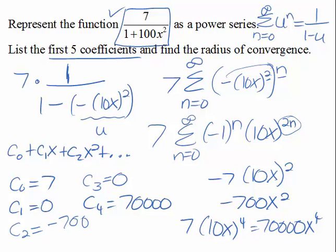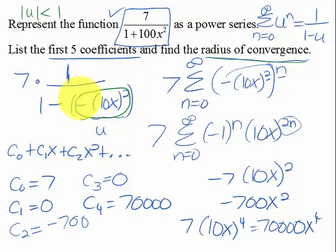Now the last thing we need to do is find the radius of convergence, and we're going to utilize the fact that we know that if it's a u, the absolute value of u to converge, this needs to be less than 1. So in place of that, we essentially had this. So the absolute value of this needs to be less than 1.